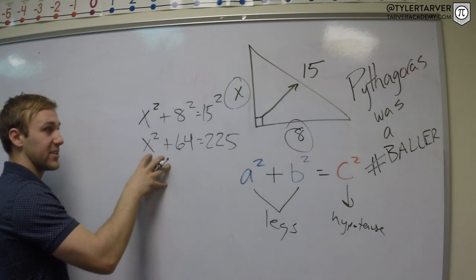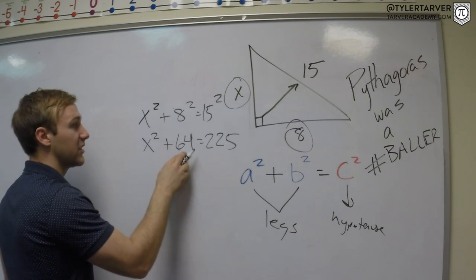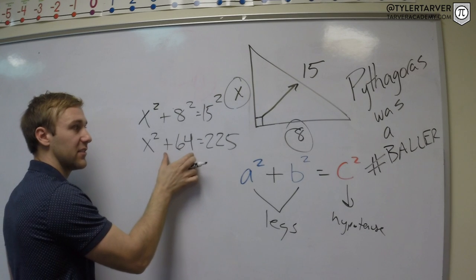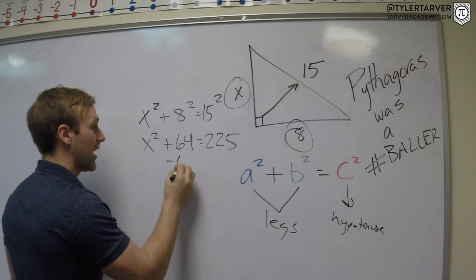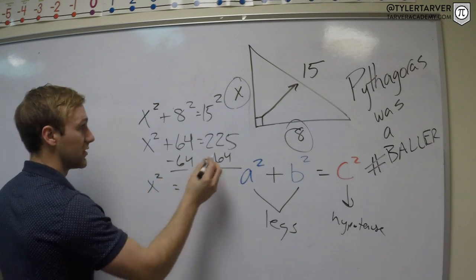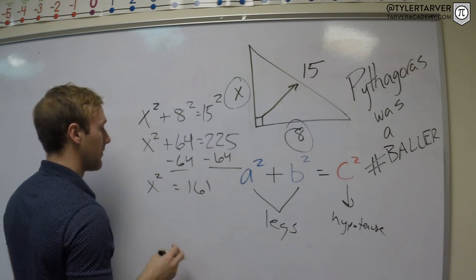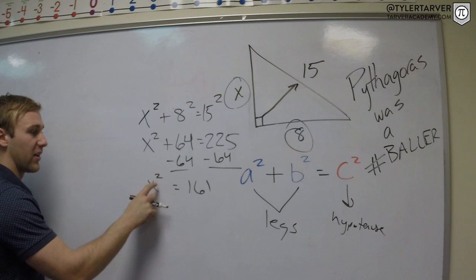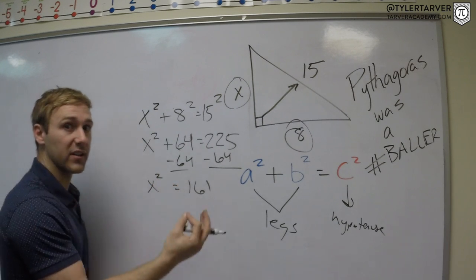Now I've got to continue to solve this. Next thing I got to do is get rid of that 64. What's the opposite of adding 64? Subtracting 64. X squared equals 161. Last step, I've got X squared. Opposite of squaring something?